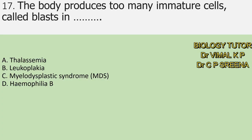Question number 17: the body produces too many immature cells called blasts. A. Thalassemia, B. Leukoplachia, C. Myelodysplastic syndrome or MDS, D. Haemophilia B. Here answer is C — MDS.